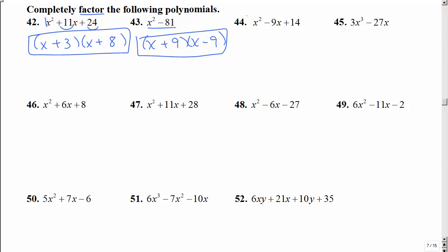The next one is just like the first one. We have a coefficient of 1. So we say what multiplies to get 14 and adds to get negative 9. And that would be negative 7 and negative 2.